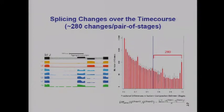Since these were RNA-seq experiments, we could examine splicing in detail. We identified about 280 genes that changed greatly in splicing structure over the time course out of the total worm genes. Here's an example of a gene whose splicing structure changed greatly over the time course.